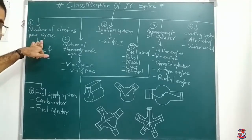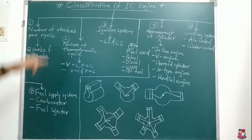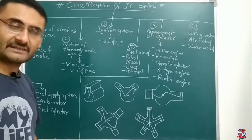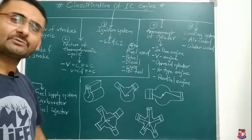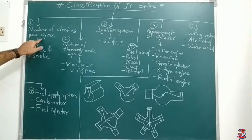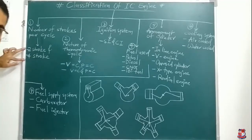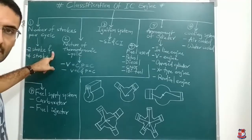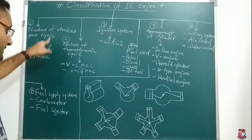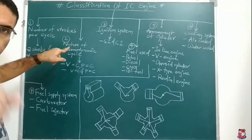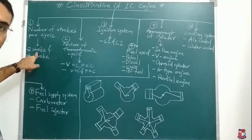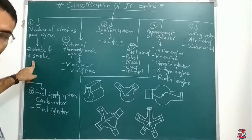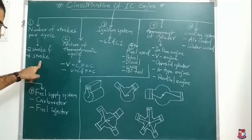The first classification is based on number of strokes per cycle. Number of strokes per cycle means that in some engines, we get 1 power stroke by completing 1 rotation of the crank, and in some engines, we get 1 power stroke by completing 2 rotations of the crank. Based on number of strokes per cycle, there are 2 classifications: 2-stroke and 4-stroke. A 2-stroke engine means the crank completes 1 rotation and within that 1 rotation we get 1 power stroke. A 4-stroke engine means the crank completes 2 rotations and within those 2 rotations we get 1 power stroke.